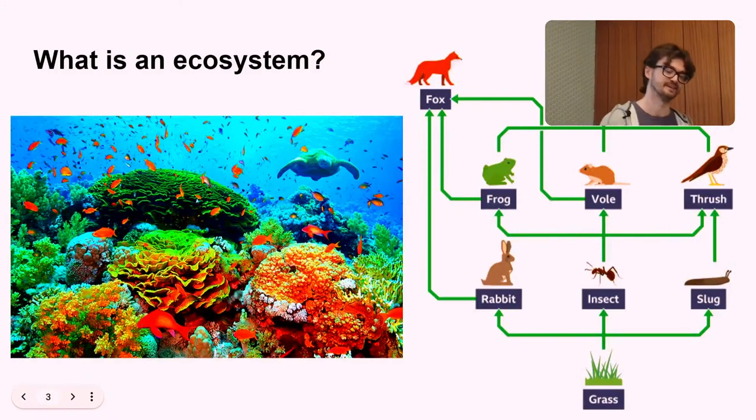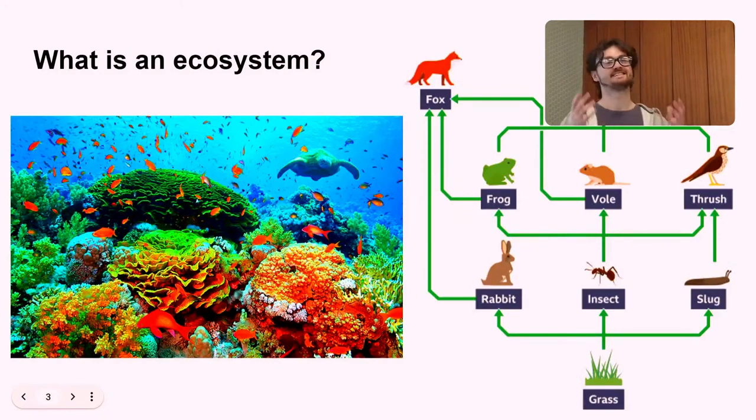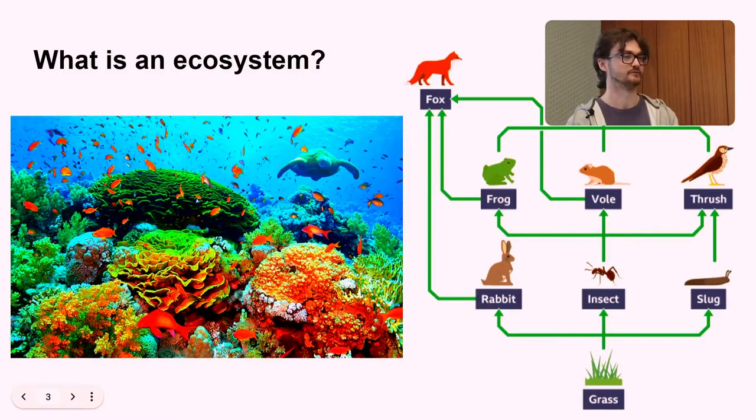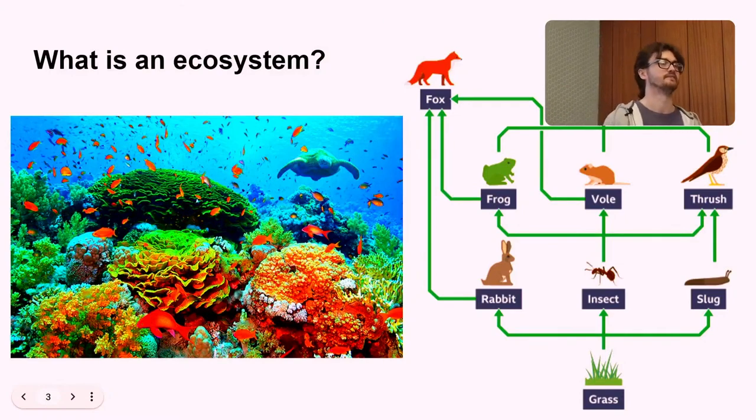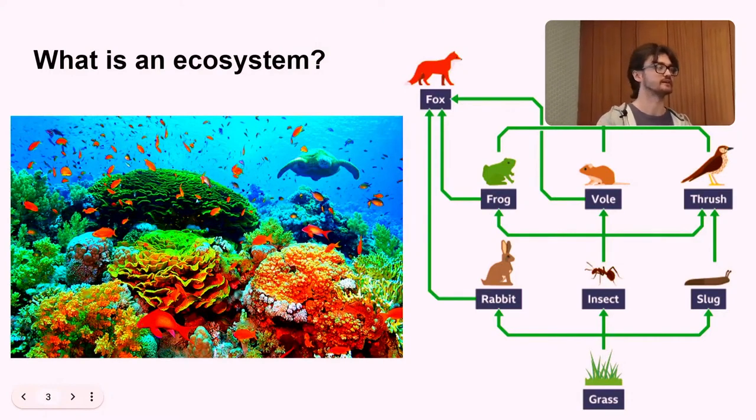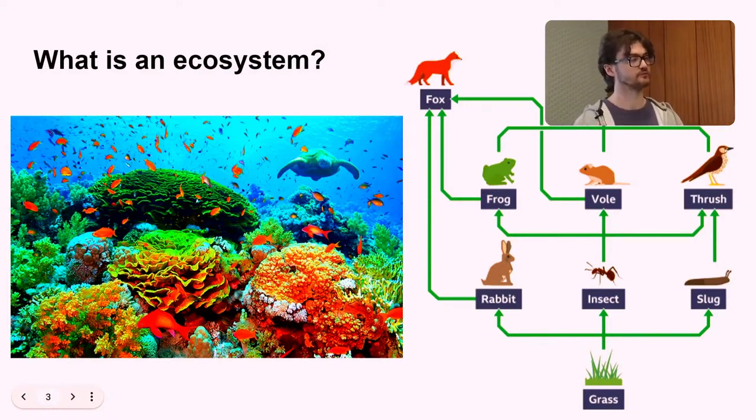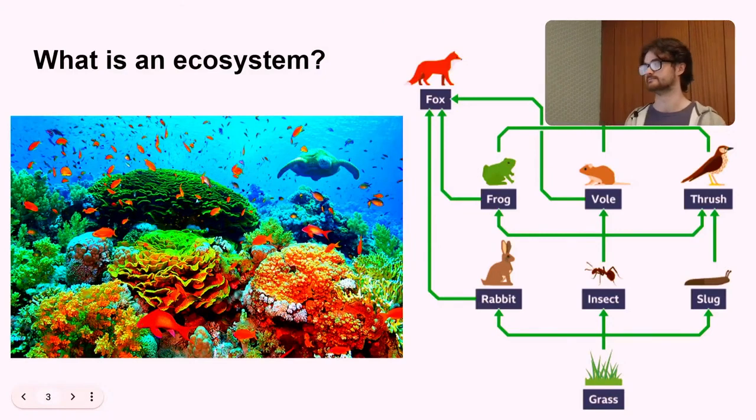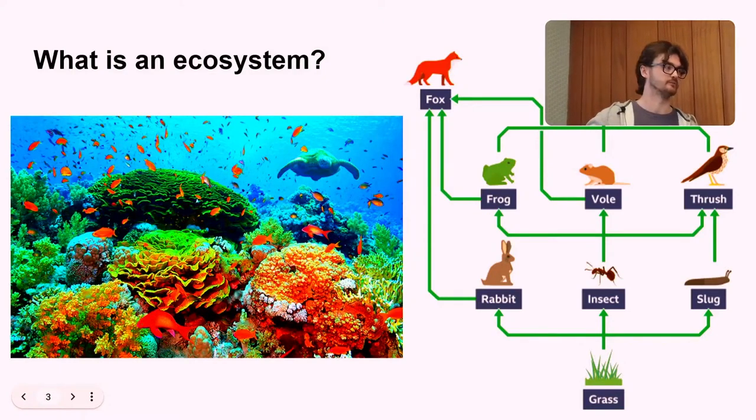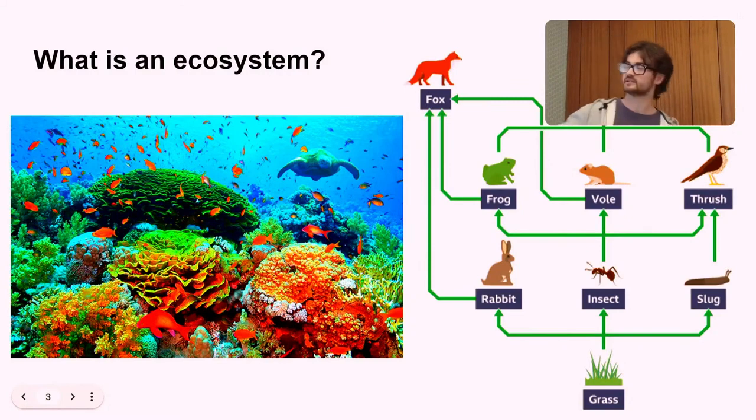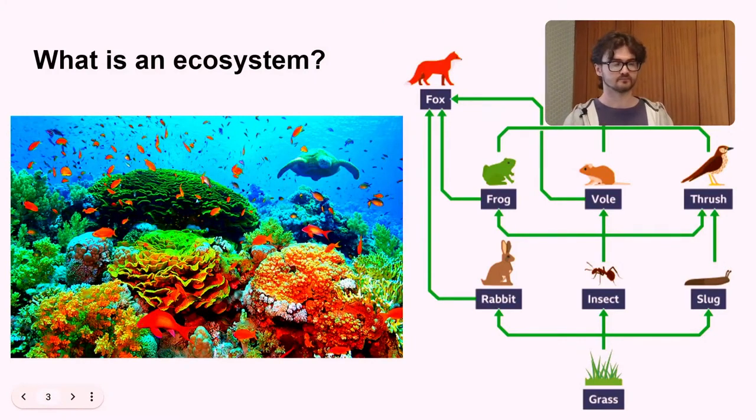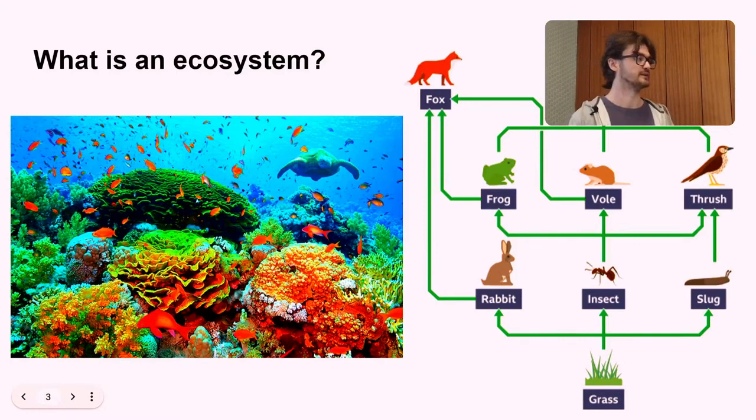So what's an ecosystem? An ecosystem is a natural environment, so like a shallow sea, and the organisms that live and interact within that environment. And a good way to analyze ecosystems is to look at food webs. So there's just a basic diagram up here of a food web. And you can see that it's split into four levels. So at the bottom, we have the primary producers. So in this example, grass, things that photosynthesize and create their own energy from the sun.